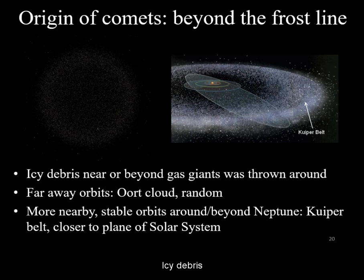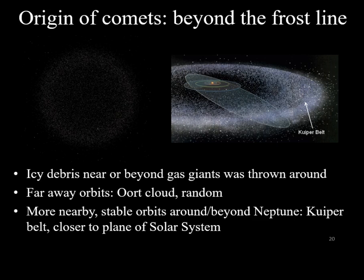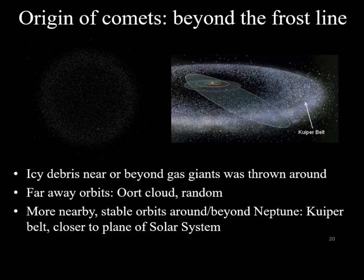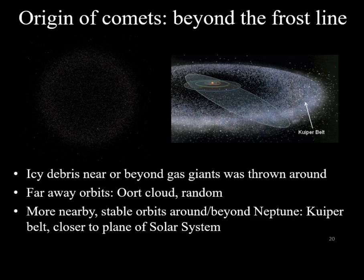Icy debris that formed beyond the planets and was never thrown around to begin with forms the other population of cometary bodies, known as the Kuiper Belt.